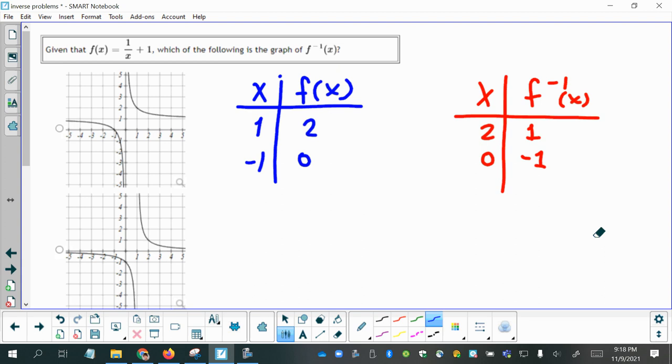So 2, 1, I'm going to go to, on the first graph here, 2, 1, nope, it doesn't fall on this graph. What about 0, negative 1? So 0 for x, negative 1 for y, nope, that doesn't fall on the graph of this function either.